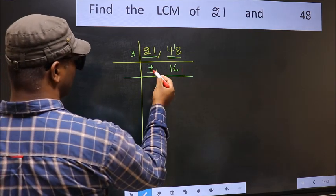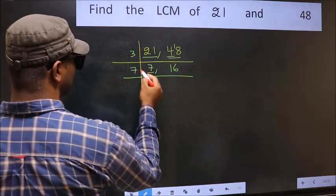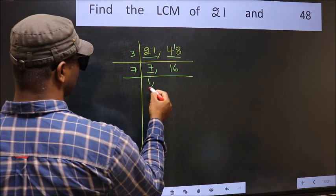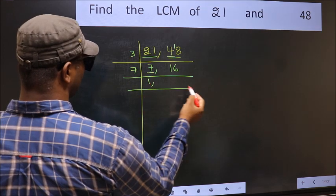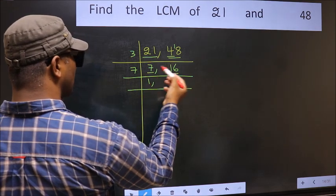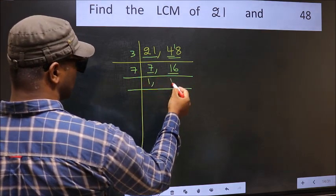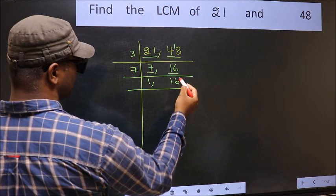Now we have 7. 7 is a prime number, so 7 times 1 is 7. The other number, 16, is not divisible by 7, so we write it down as it is.